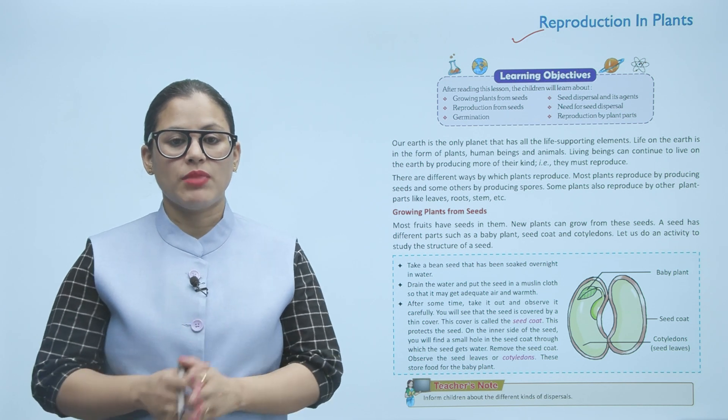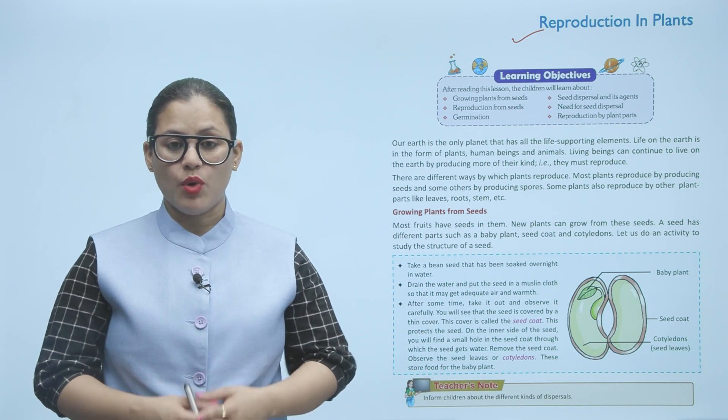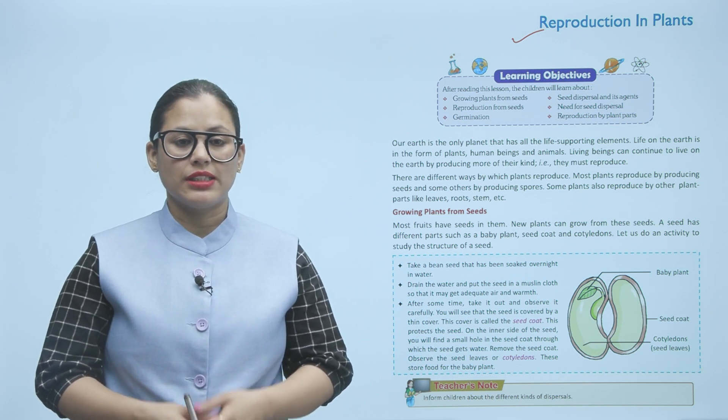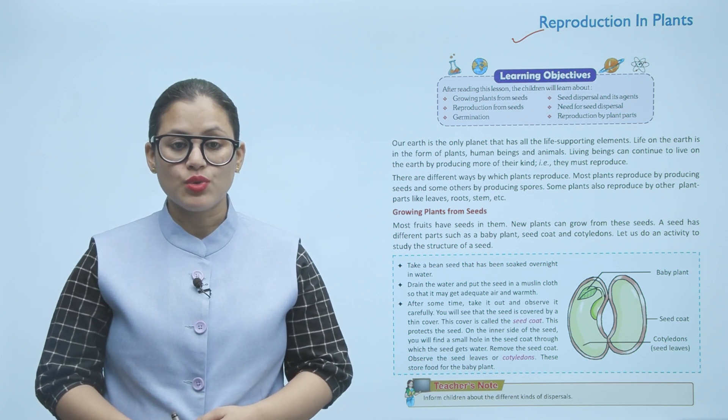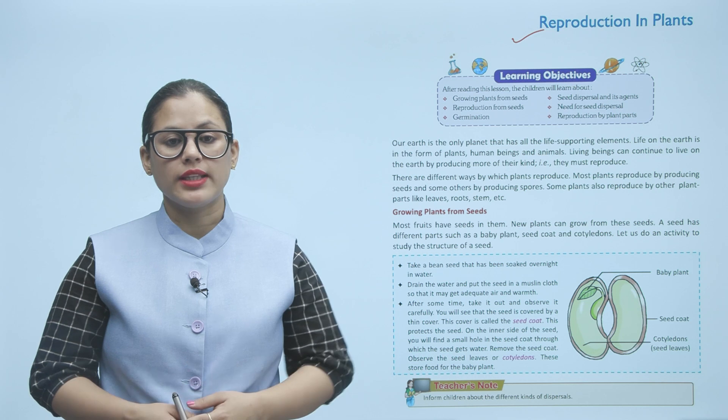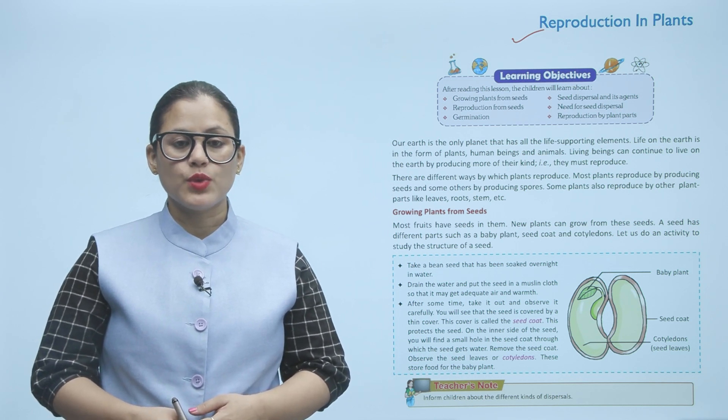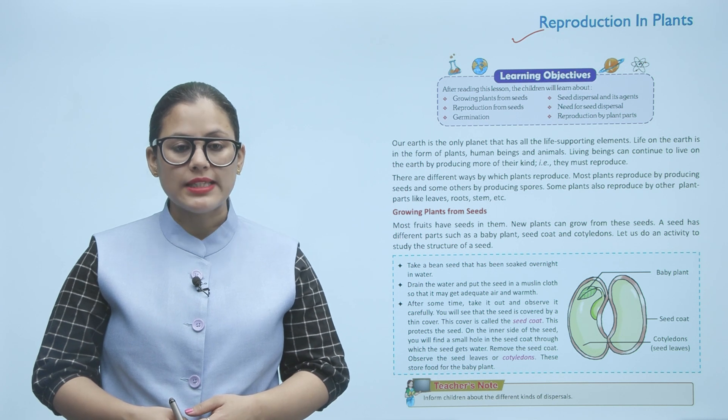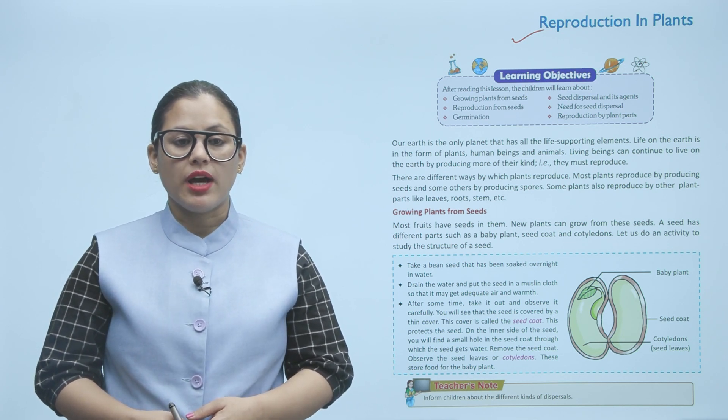Our earth is the only planet that has all the life supporting elements. Life on earth is in the form of plants, human beings, and animals. Living beings can continue to live on earth by producing more of their kind, that is they must reproduce.